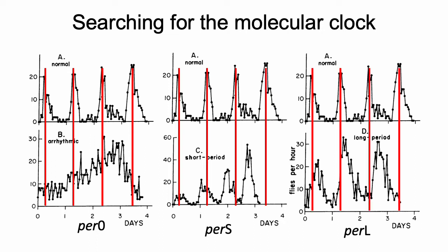As for PER-L, when the wild-type reaches four cycles, PER-L appears to be about another full cycle away — they've only had three peak eclosion events over the course of four days, whereas the wild-type have had four.